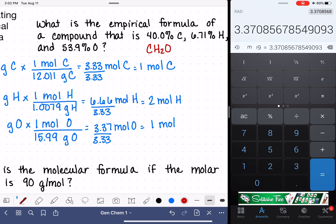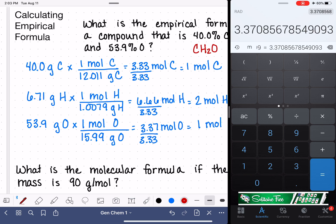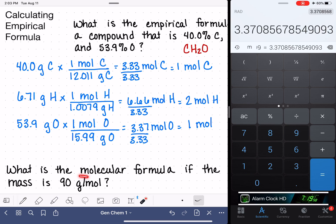Now this problem has a second part to it. What is the molecular formula if the mass is 90 grams per mole? Remember, the empirical formula is just the smallest whole number ratio. The molecular formula could be C6H2O, or it could be C2H4O2, or C3H8O3 would also be possible.